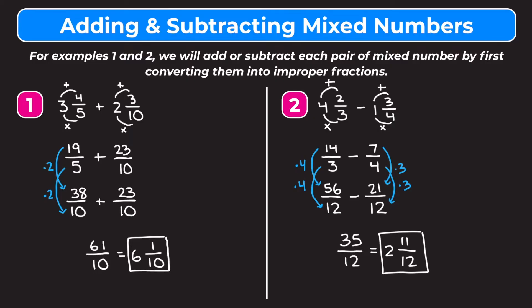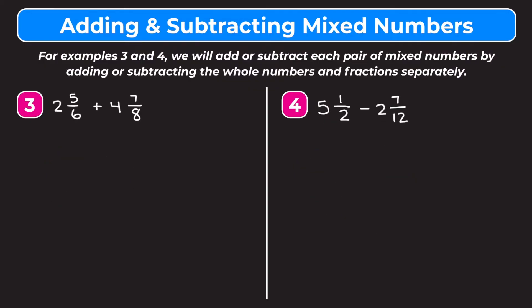Now let's work through two examples using the second method. For these two examples we're going to add or subtract each pair of mixed numbers by adding or subtracting the whole numbers and fractions separately — we are not going to turn our mixed numbers into improper fractions first. This method is a little bit harder for some students, but it should be faster because we're not going to have to do as much long multiplication.